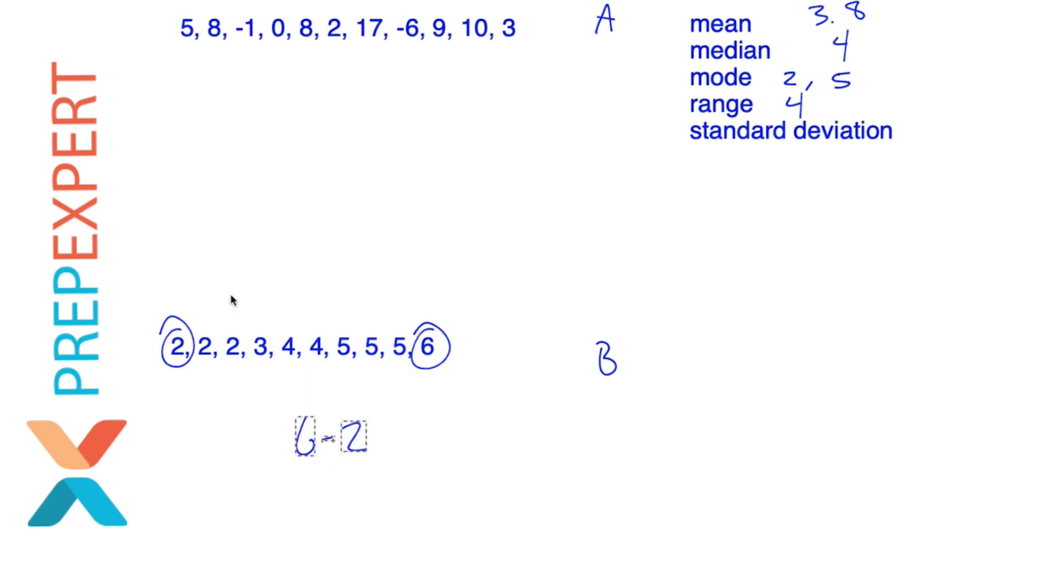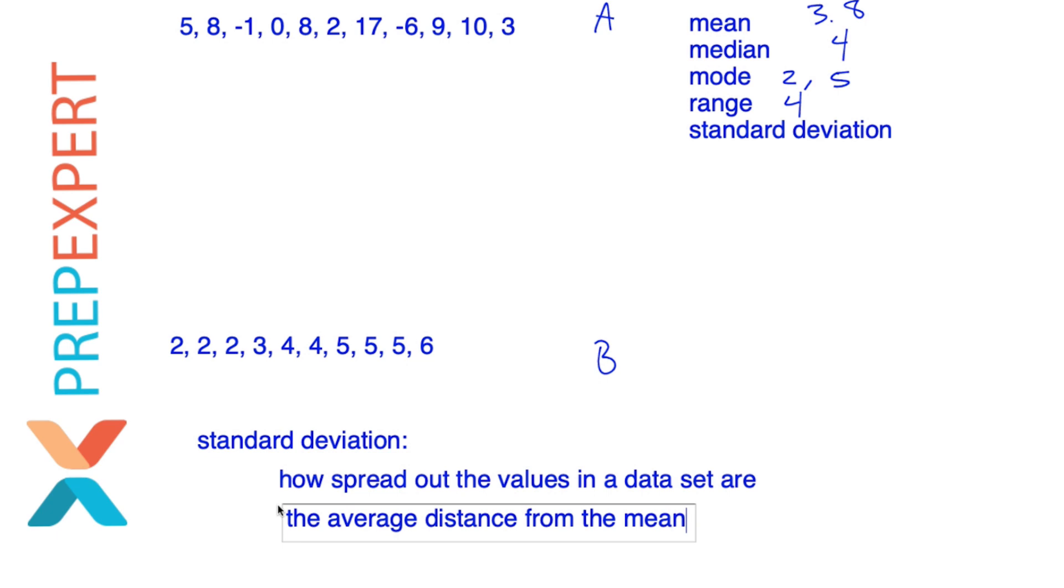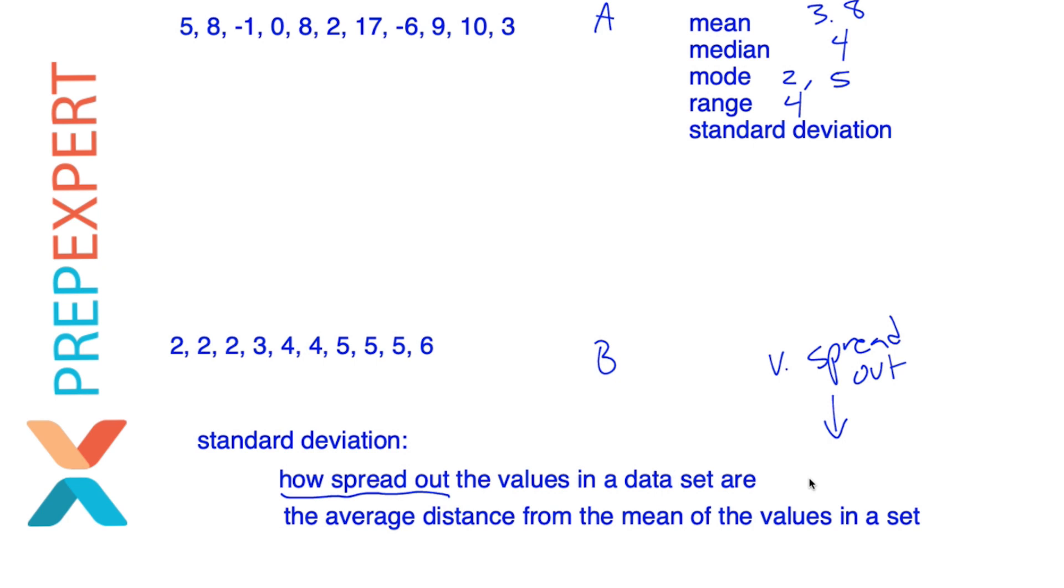And now we're ready for standard deviation. Now a lot of people really hate standard deviation. And I understand it's a complicated concept. But good news on the SAT and the ACT, you don't actually have to calculate standard deviation. You just need to be able to recognize it when you see it, you need to be able to compare the standard deviations between two data sets. So in order to make that easier, let me first define standard deviation. Standard deviation in simple terms is just how spread out the values in a data set are. The technical definition is something like the average distance from the mean of the values in a set. But we don't really need to know that. All we really need to know is that standard deviation represents how spread out the values in a data set are. If they are very spread out, then we have a high standard deviation. If they are not very spread out, then we have a low standard deviation.